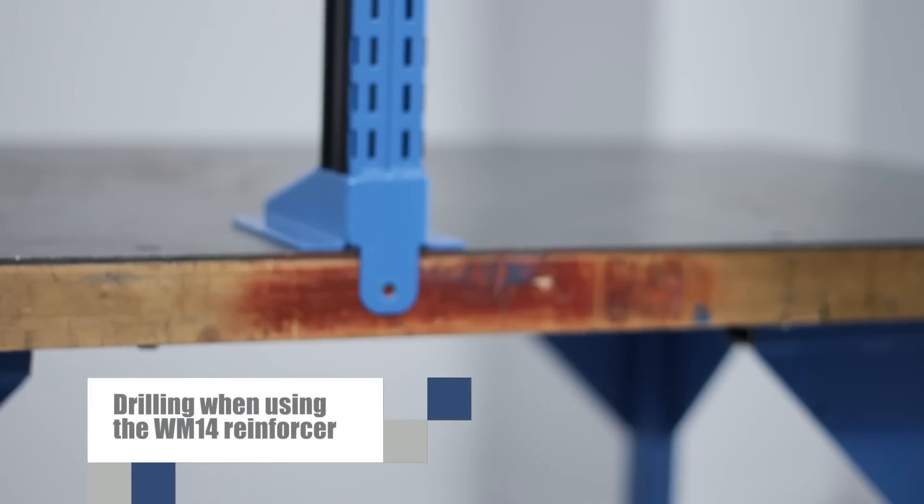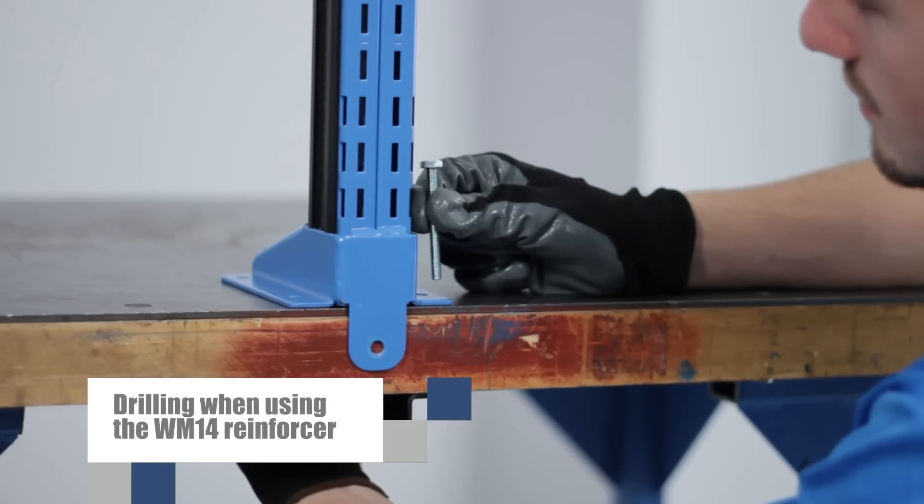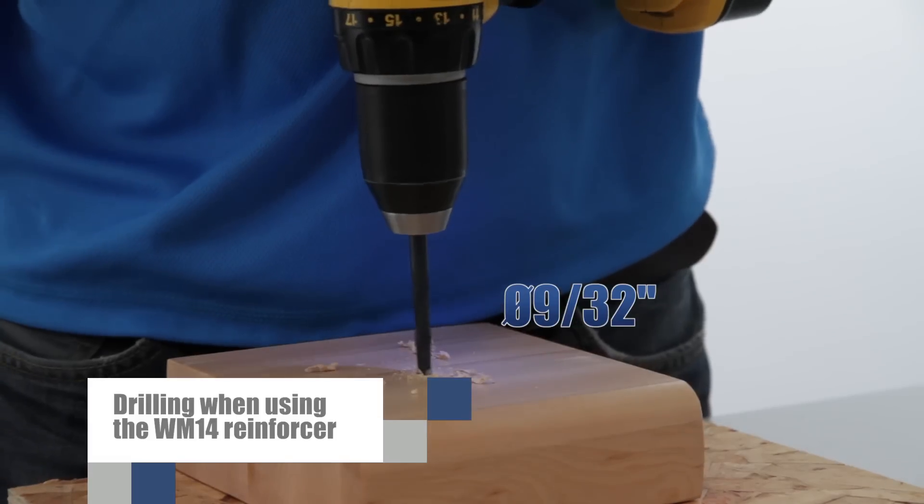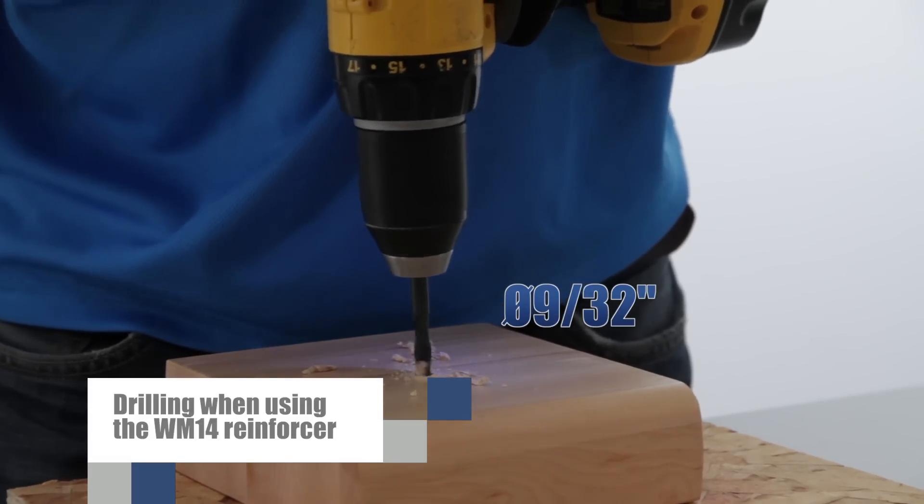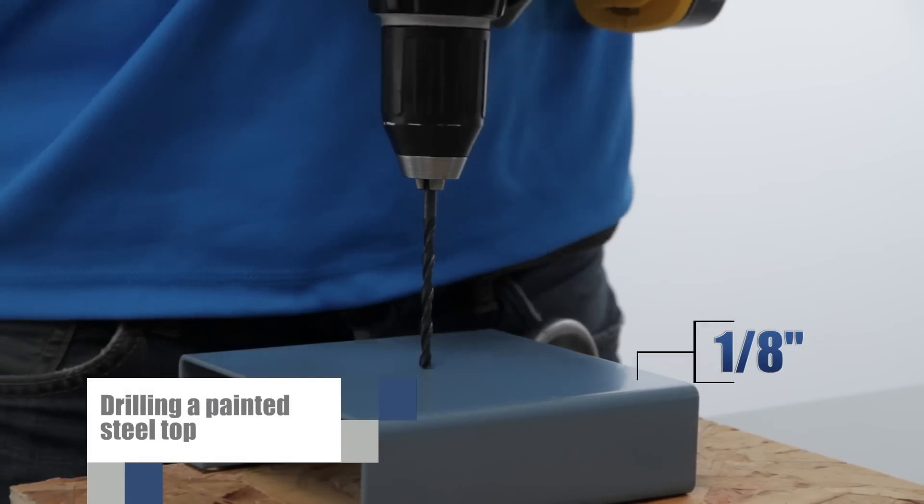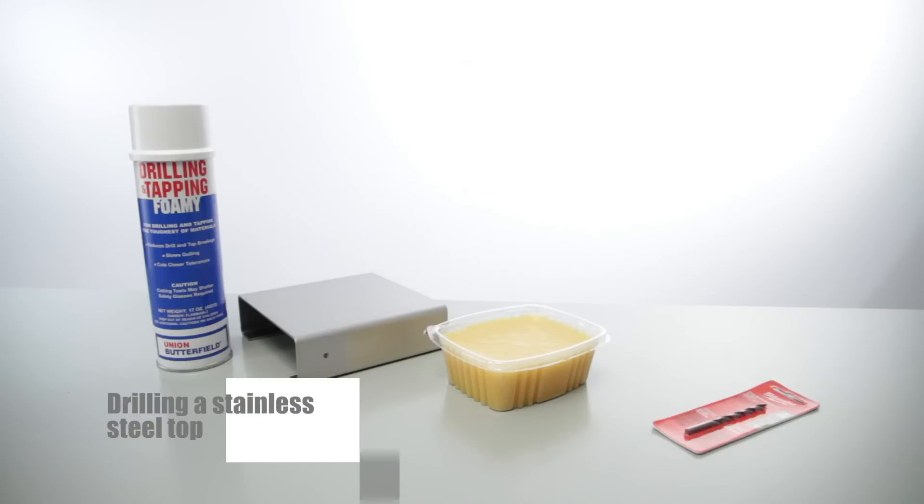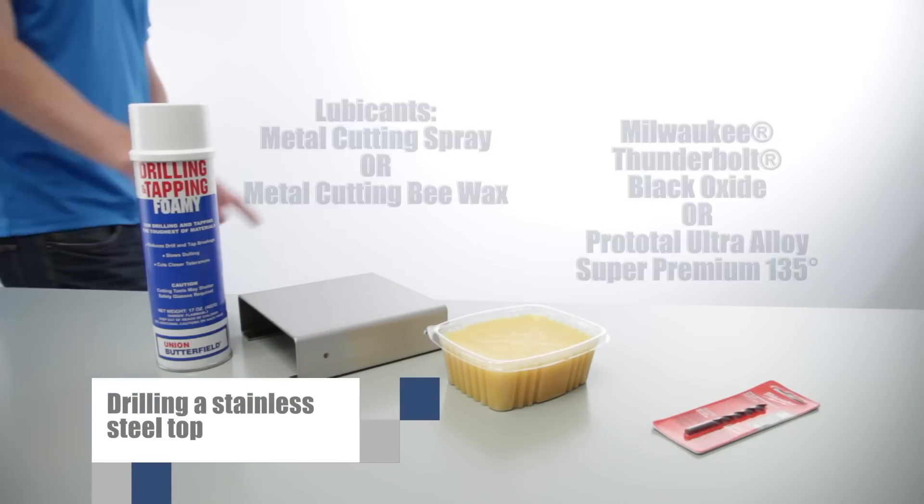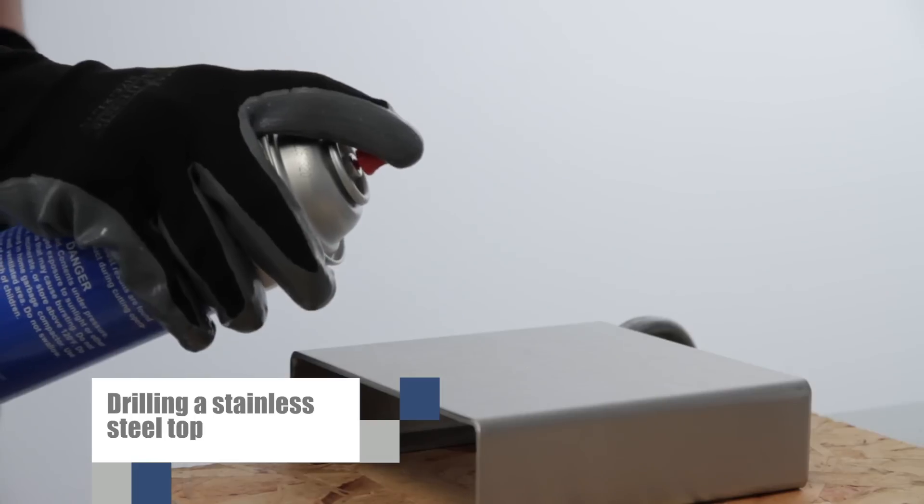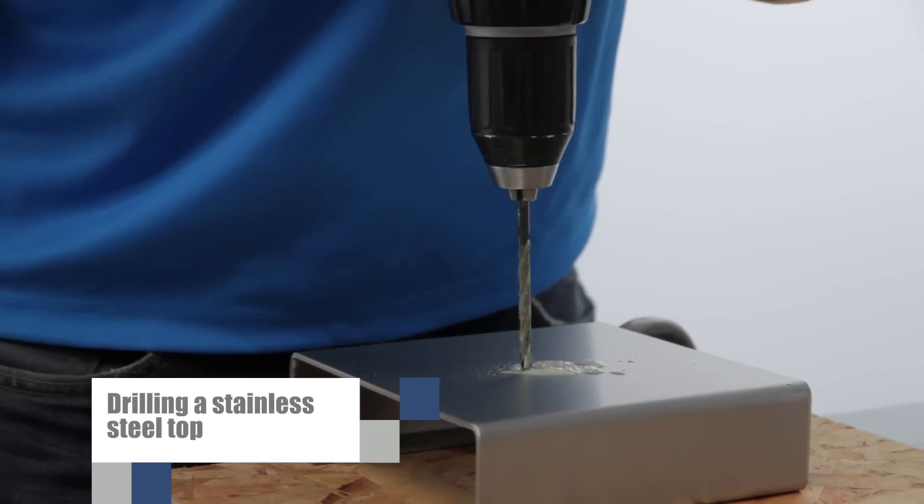If you are installing a WM14 reinforcer, the holes for the uprights need to accommodate the 2.5 inch bolts. In this case, the hole diameter needs to be 9/32nds and you have to drill clean through the thickness of the work surface. If you have a painted steel top that is approximately 1/8 inches thick, you should use a 13/64ths drill bit. If you are drilling a stainless steel top, here are the types of lubricants and drill bits that Rousseau recommends. You will also need to adjust your drill speed to avoid overheating the bit.